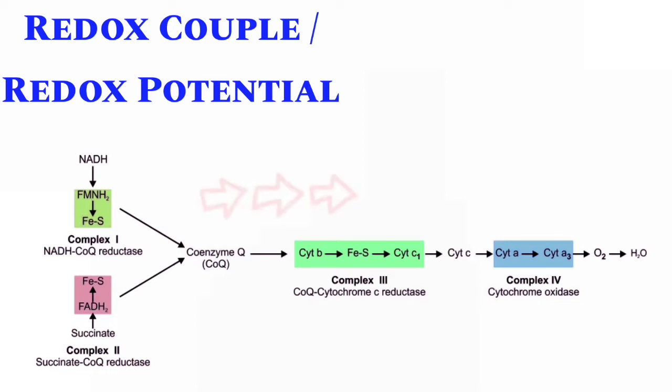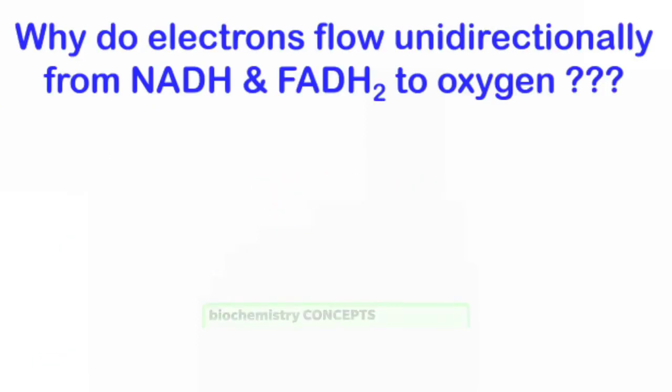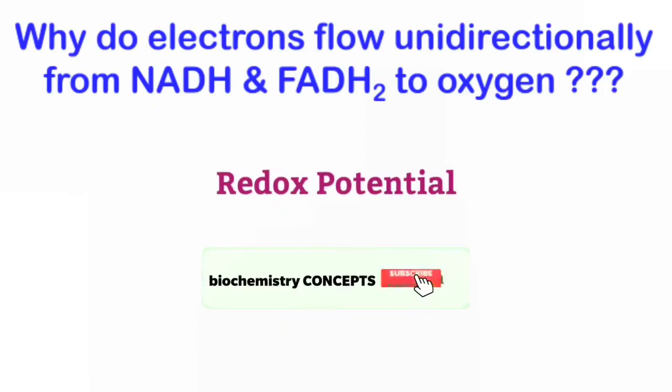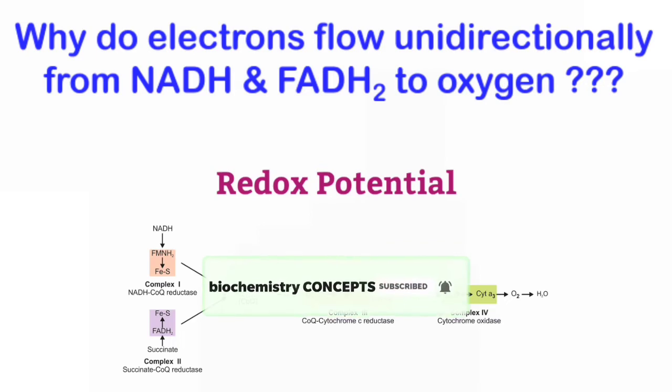The concept of this video is why these electrons are moving in a particular direction, and what decides their flow in the electron transport chain. And the answer is, it is because of Redox Potential. Now, we will discuss what is Redox Potential and Redox Pair in detail.